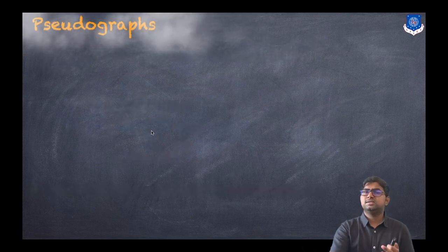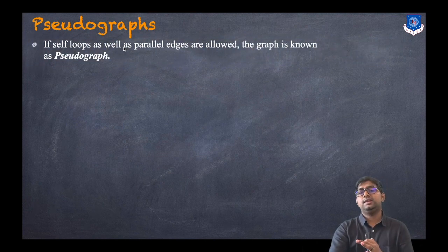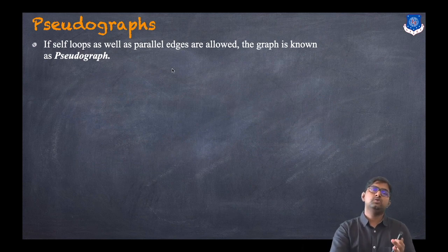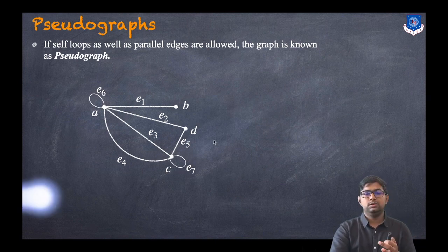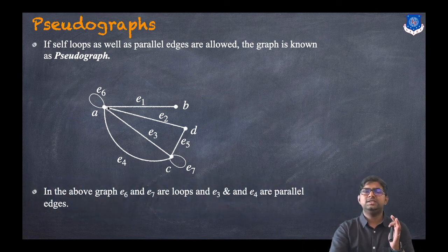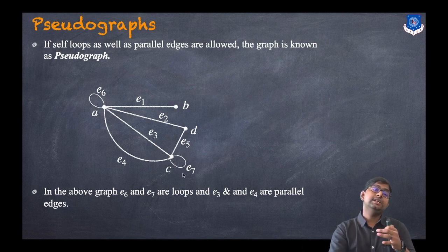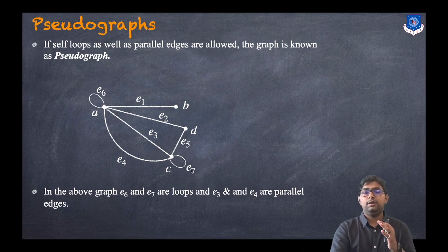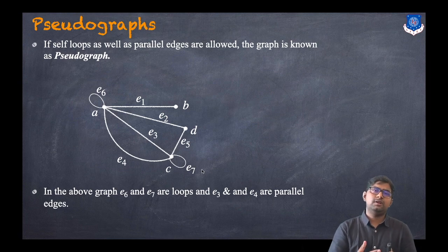The second type is a pseudograph. In a pseudograph, both self-loops and parallel edges are allowed. Consider this graph — it is the same graph with self-loops added. E6 and E7 are self-loops: E7 connects C to itself. E3 and E4 remain the parallel edges. Since both parallel edges and self-loops are present, this type of graph is called a pseudograph.